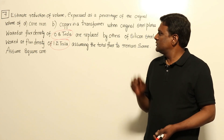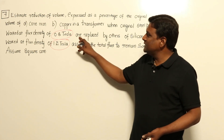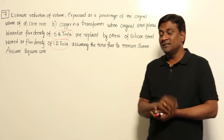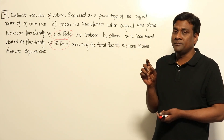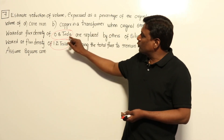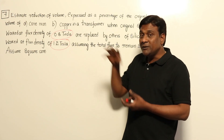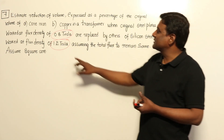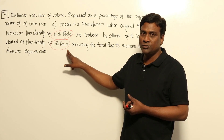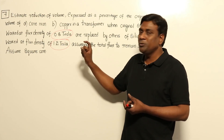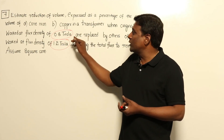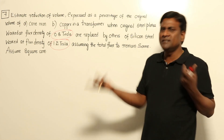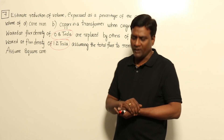So in this question, from 0.8 tesla to 1.2 tesla — I'm not changing the flux density in a given material. For one material it is 0.8 tesla, and if that material is replaced with another material, that flux density is 1.2 tesla. The point to be noted here is: I'm not changing from 0.8 tesla to 1.2 tesla in a given material, but the material itself is being changed.